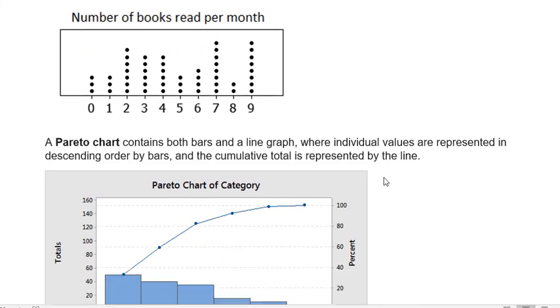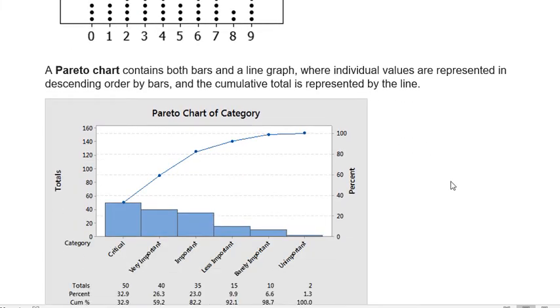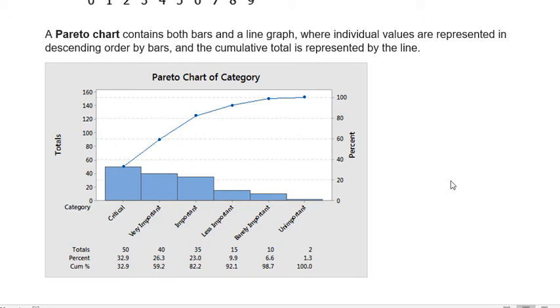And the last one I wanted to talk about is a Pareto chart. It contains both bars and a line graph. Individual values are represented in descending order by bars. So you always put the tallest bar to the left and then going down to the right. The cumulative total is represented by the line. This is the percent over here. This is the frequency.